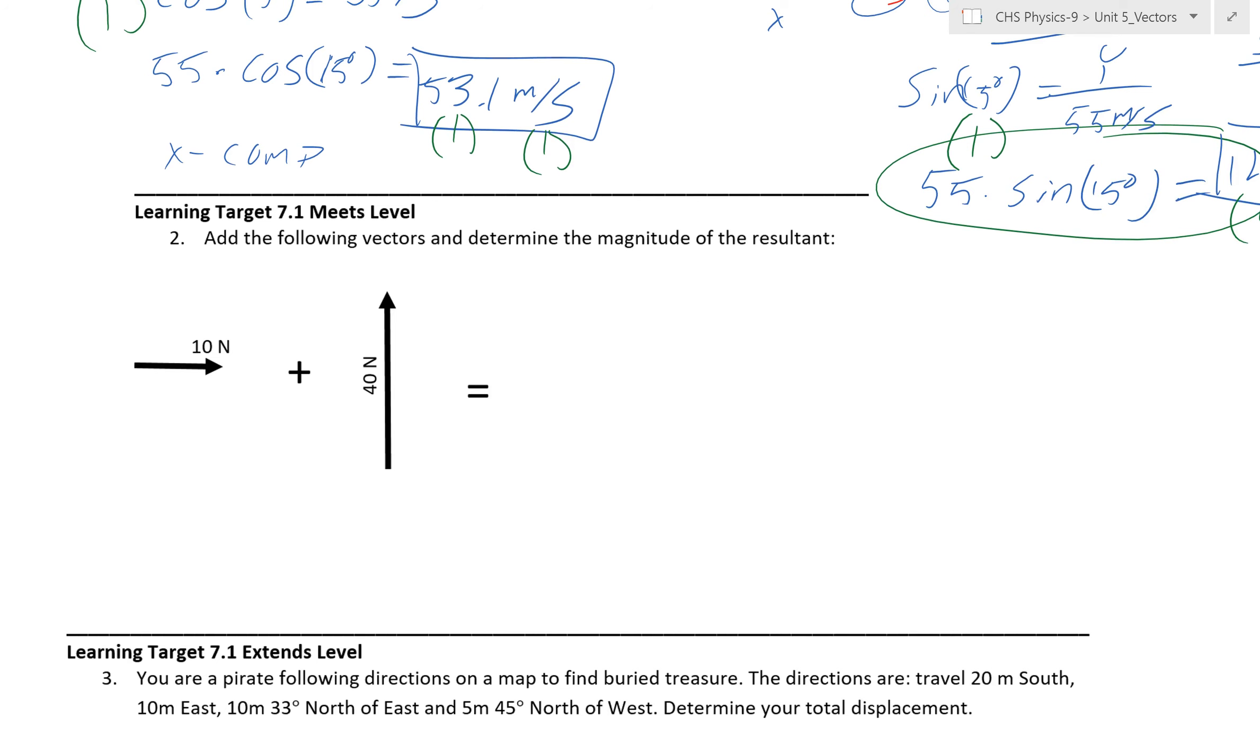Meets level. Very straightforward. You just have to draw your triangles together, or draw your arrows together, tip to tail again, and then your resultant. This would be your 10 newtons, this would be your 40 newtons, and then this is what we're going to solve for. This will be, forgot to mention, out of 1.5 points.